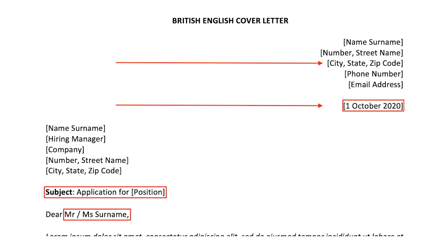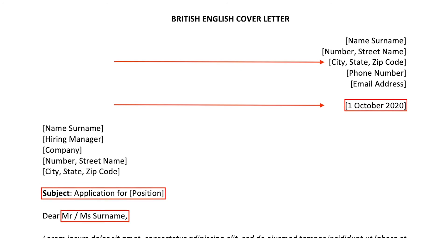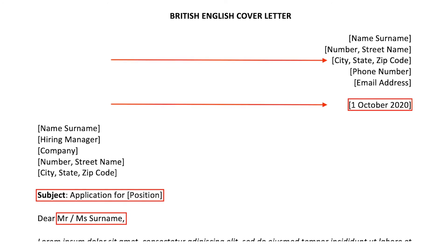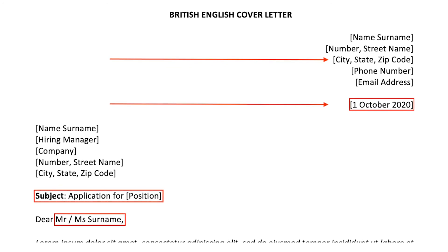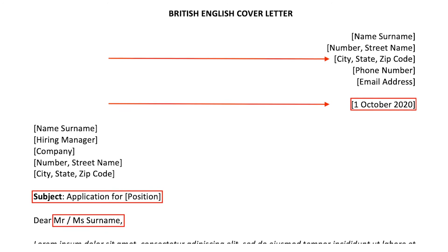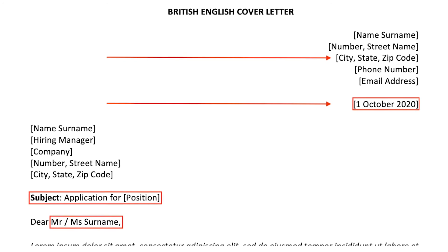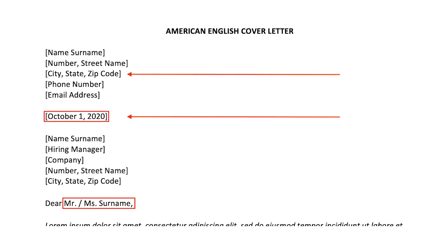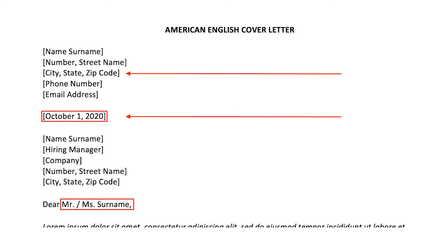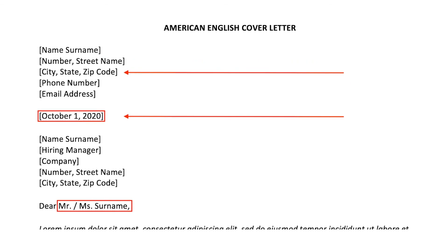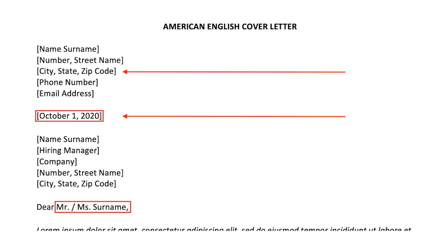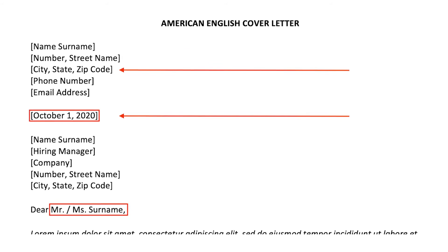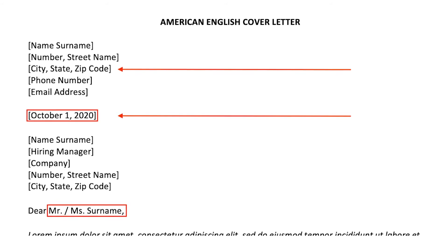For British English, you need to put the contact information and date on the right side. Then put the date first, followed by the month, and exclude the comma. The subject line is commonly included in British English letters but usually left out in the US. For American usage, the month is placed first, followed by the date, and you insert a comma between the day and year. We also include a dot after the abbreviation Mr. or Ms., while for British English you can leave it out.